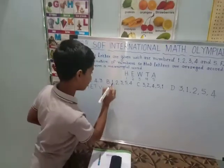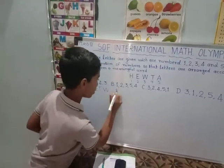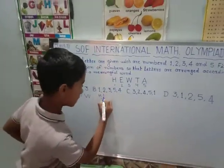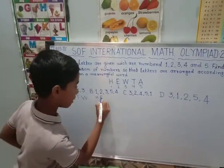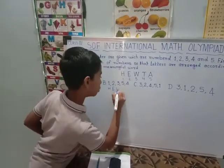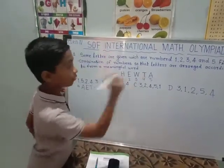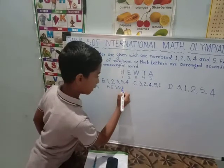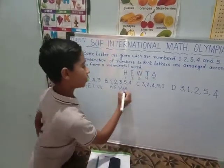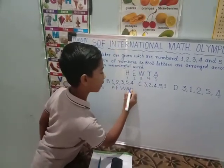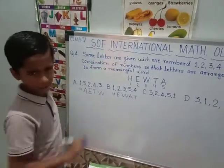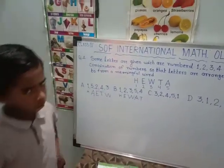Now we will try option B1. H comes first because it is 1. Now 2 is E. Third is W. Fifth is A. Fourth is T. We will see if it is a meaningful word or not. It is not a meaningful word.